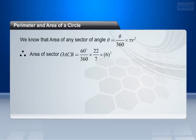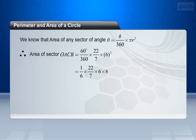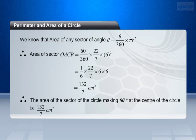Therefore, area of sector OACB equals 60 degrees by 360 degrees into 22 by 7 into 6 square. This equals 1 by 6 into 22 by 7 into 6 into 6, which equals 132 by 7 cm square. Therefore, the area of the sector of the circle making 60 degrees at the center of the circle is 132 by 7 cm square.